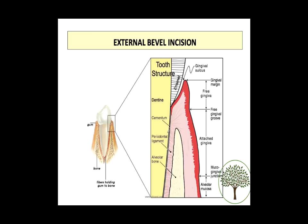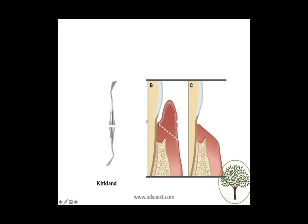When discussing horizontal incisions, there's another incision that students often get confused about — the external bevel incision. It is not an incision used in flap surgery, but it frequently appears in MCQs to confuse students. In the external bevel incision, the bevel is outside, meaning you can see the bevel. The incision cuts a significant amount of gingiva, unlike the internal bevel incision which is much more conservative and cuts very little gingiva.